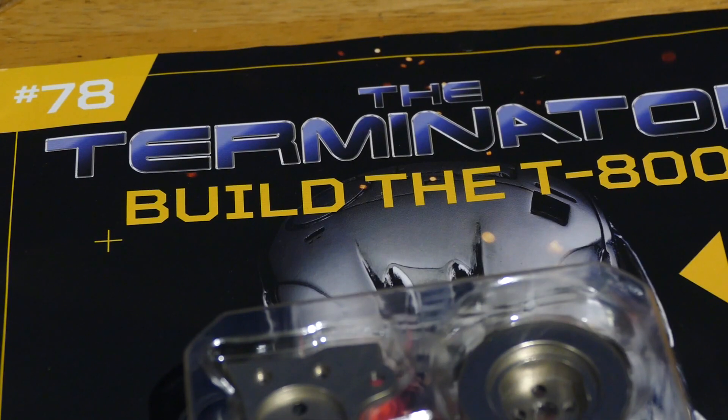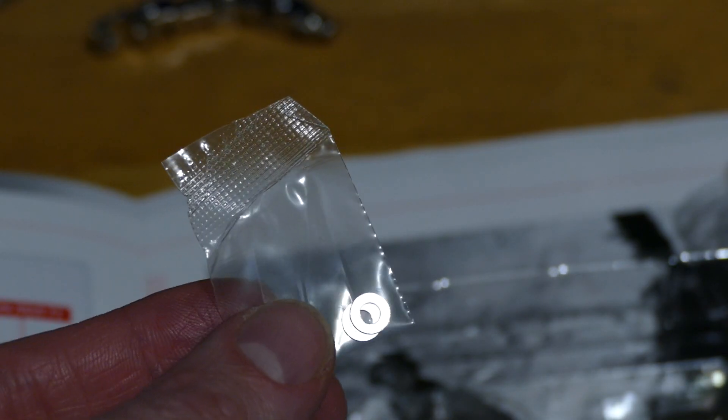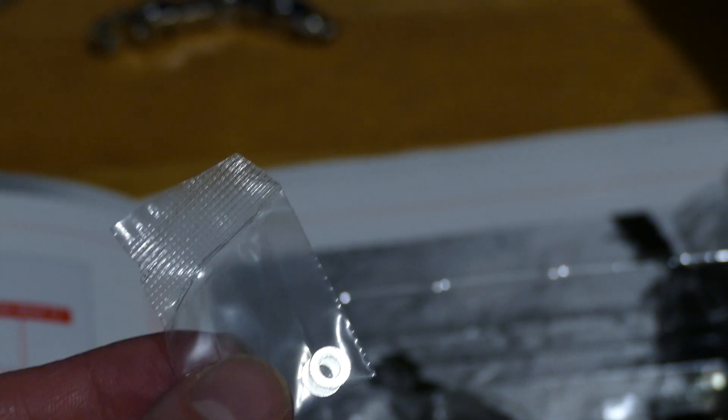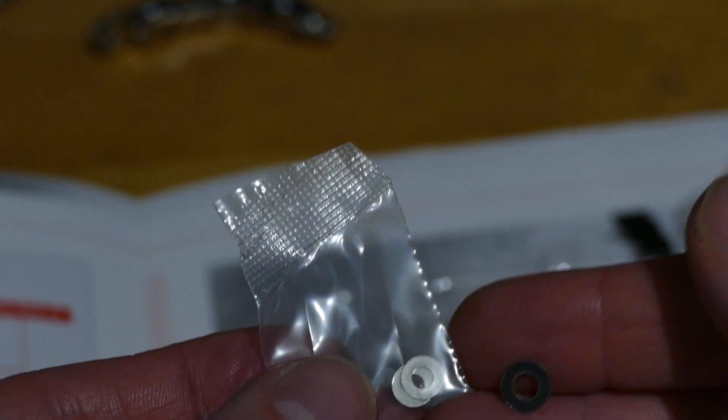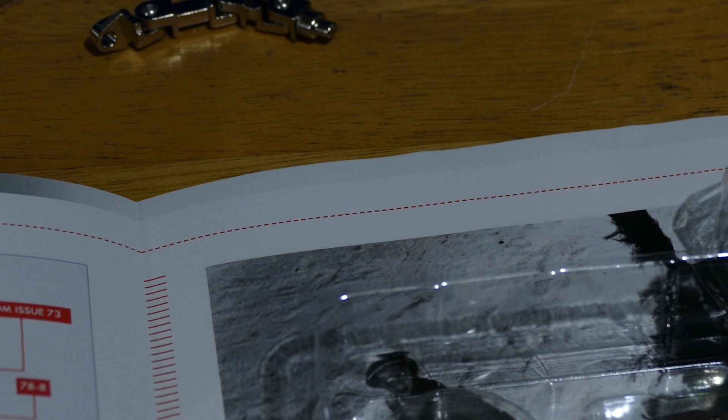So now it's on to issue 78. Now in 78 they give us some washers which look remarkably similar to the ones that I've just been using to do the fingers. They're a little bit smaller. But you see, you can do washers, Hachette, just not in the right places. But anyway, let us begin.